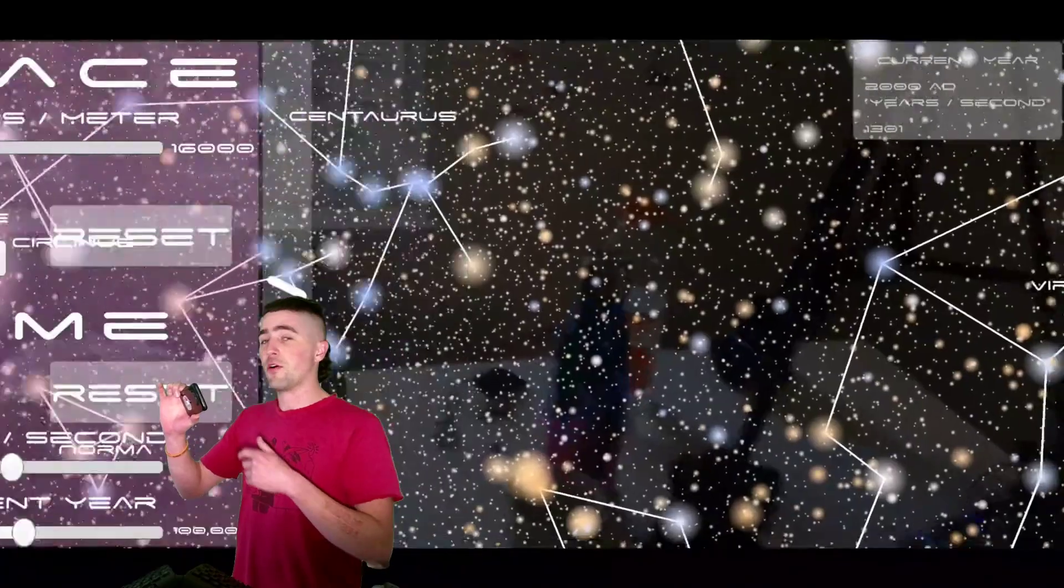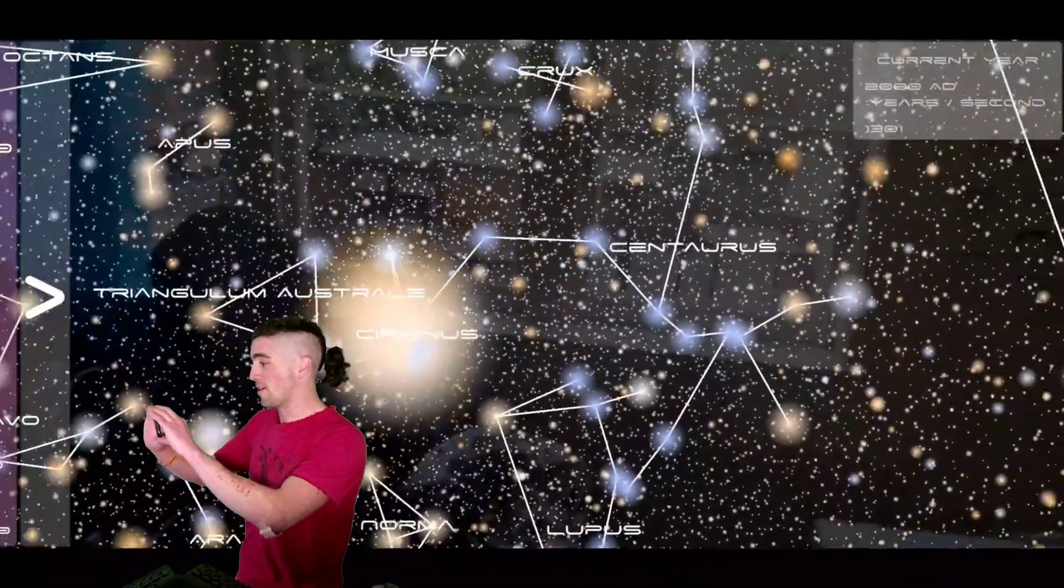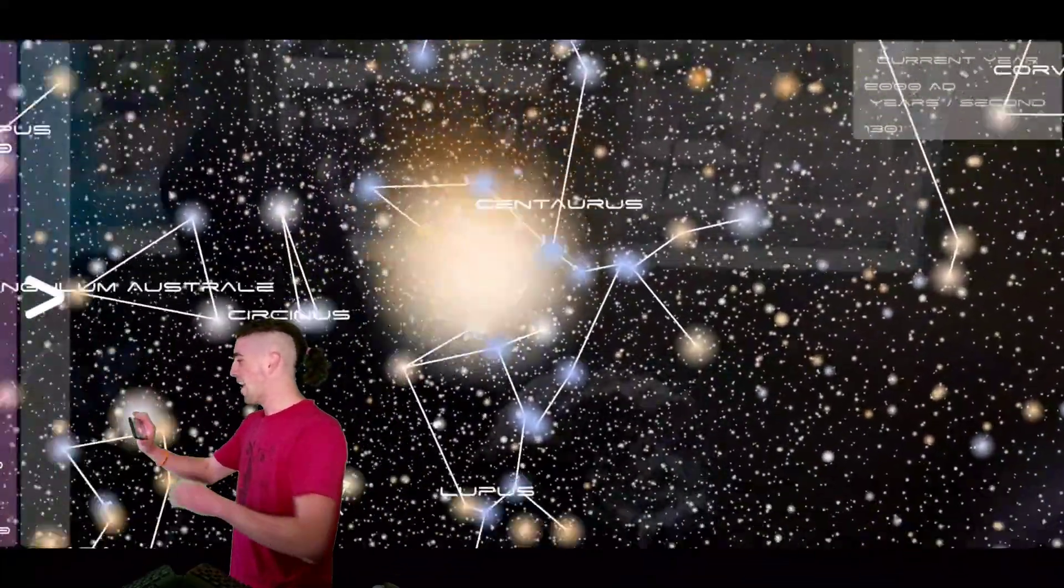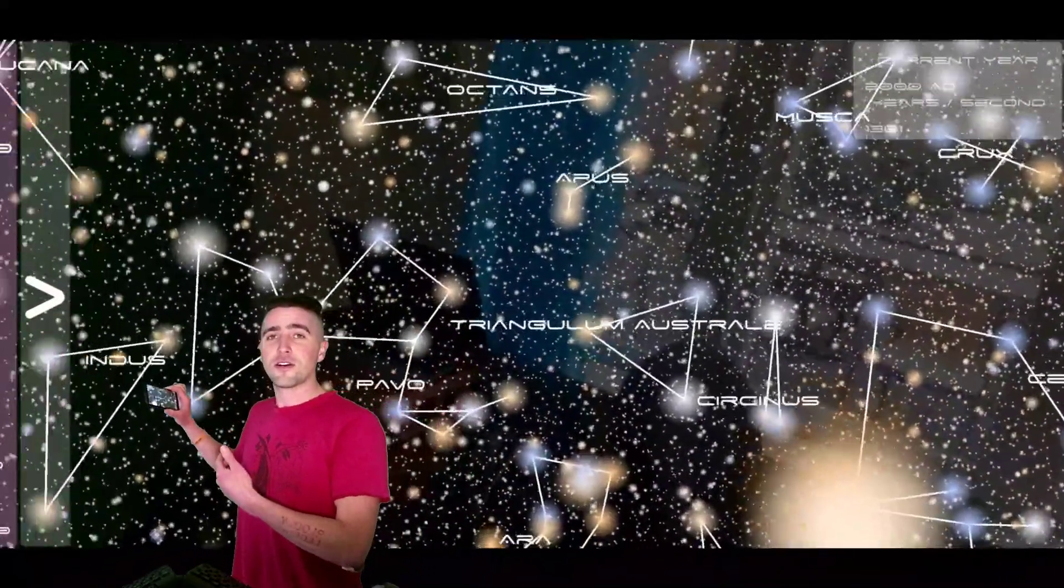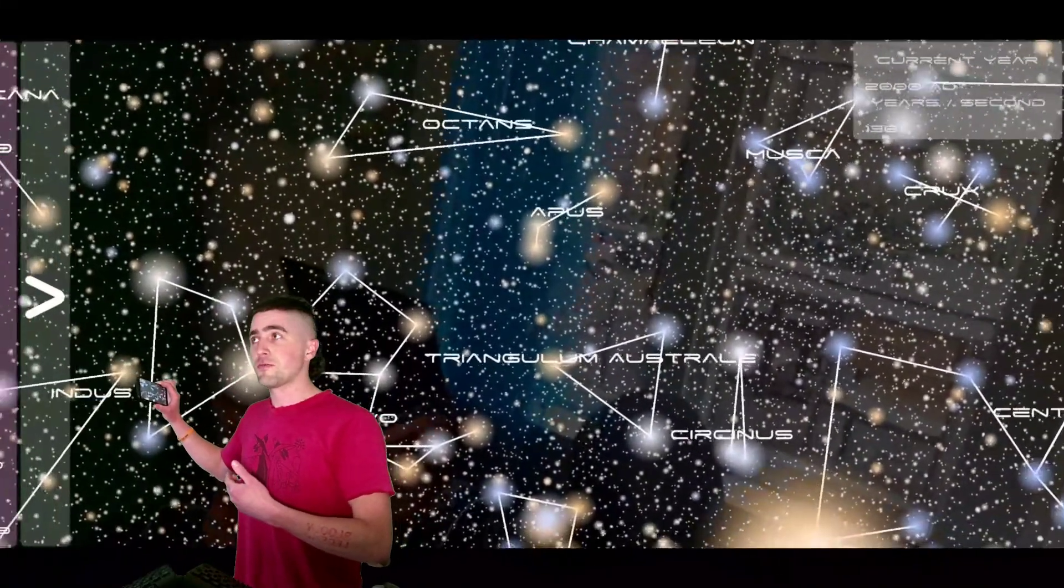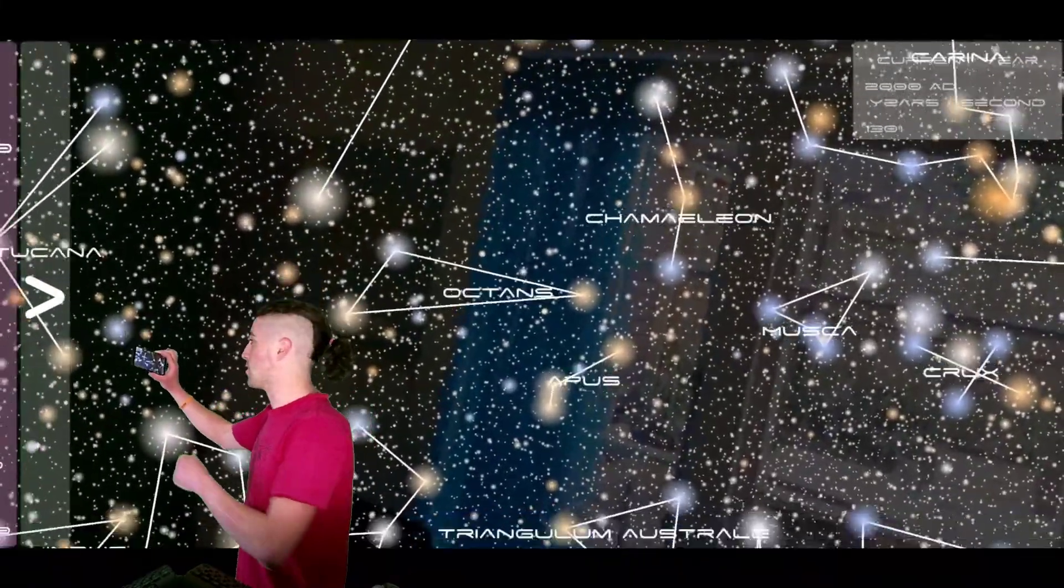Here we have the Western or modern constellation system. And of course there we have, in the Centaurus system, our friend Alpha Centauri. And this is a very common constellation system. It's used by astronomers a lot to locate something in the sky.